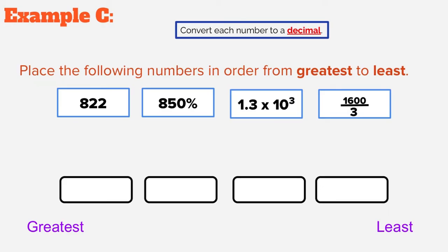Here we are at Example C. It's like Example A — put in order from greatest to least, no numbers pre-placed — but these numbers are much larger. Our first number is 822, which is already a whole number. Next is 850%: moving the decimal two places to the left gives us 8.5. We can also use the decimals calculator to confirm.